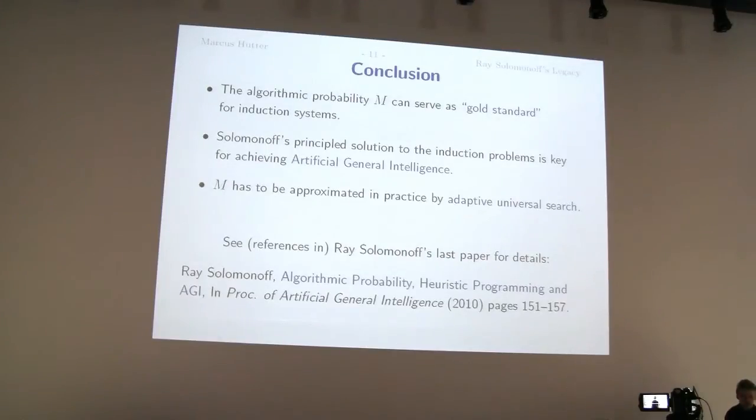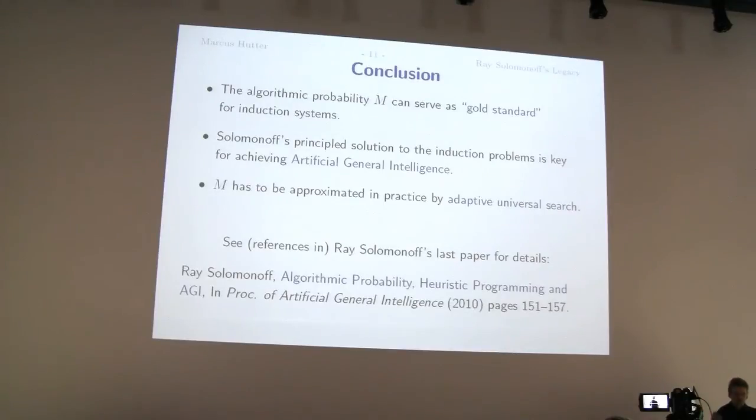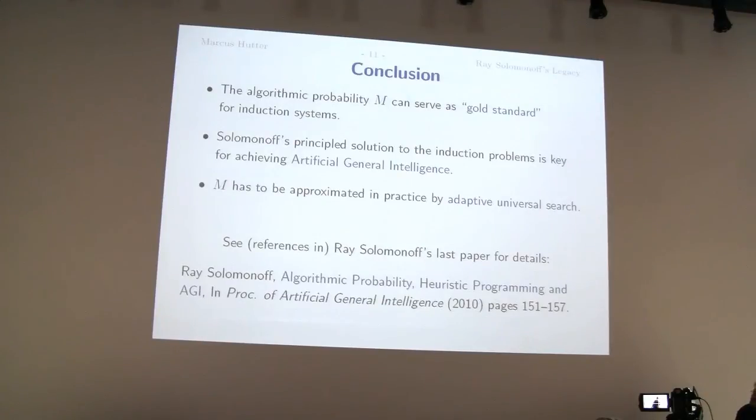So here's my conclusion slide. The algorithmic probability M can serve as a gold standard for induction systems. I mean, you can show that it's theoretically optimal in a very quantitative sense. But practical is incomputable. Ray would even call it as a feature and not a bug. I'm not sure about that. But in any case, I think that's not really a problem. It's like optimal play in zero-sum games like chess. That's minimax to the end and that's optimal. And yes, for any real game you cannot use it, but you start approximating that. And the same you have to do for this universal notion of search. So this Solomonoff distribution is a principled solution to the induction problem, which then can be used as a key ingredient for AGI systems, at least theoretically well-founded AGI systems. And that's the paper here at the conference. Thanks.